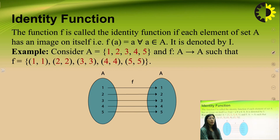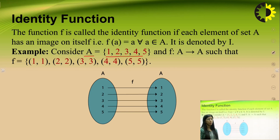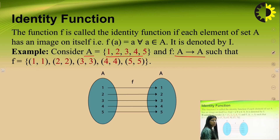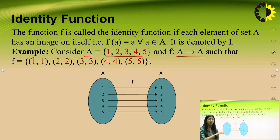Next is the identity function. An identity function is one where every element maps to itself only. For example, let set A contain elements 1, 2, 3, 4, 5. The mapping is from A to A, where 1 maps to 1, 2 maps to 2, 3 maps to 3, 4 maps to 4, and 5 maps to 5. This function contains the pairings (1,1), (2,2), (3,3), (4,4), (5,5). This is the identity function.